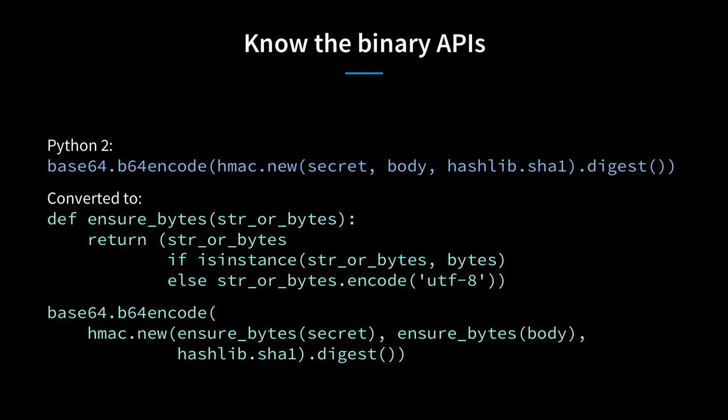Know the binary APIs—which APIs in Python 2 or 3 are binary and which are not? Especially in Python 3, you need to know which ones return bytes. As my colleague Barry Warsaw pointed out, the most fun are those that accept both. Here's an example where we need to pass bytes in Python 3: make little helper functions like `ensure_bytes`. Because you're going to write a lot of this code if you don't—don't repeat yourself. This ensures you have bytes in the Python 3 sense and then pass `ensure_bytes(secret)` and `ensure_bytes(body)` to a cryptographic hash.